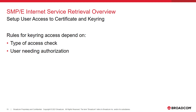Next, we need to write rules to allow users to access the keyring we created. The rules to write depend on the type of access check you want to deploy. You can write either ring-specific rules or global profile checking rules. You also need to decide what users need access to the keyring, as the access level is different if the user is or is not the keyring or certificate owner. In the following slides, we will give you sample commands for each ESM. An in-depth explanation of the options presented is discussed in a previous video in the series titled Keyring and Certificate Security.